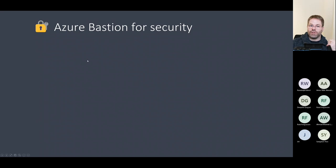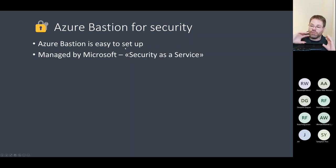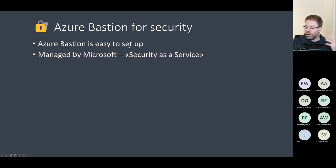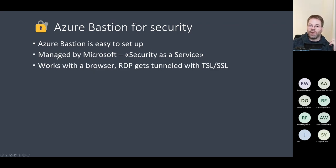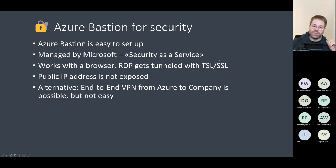Azure Bastion is quite easy to set up. The other way would be a VPN tunnel to your VM, but then you really need to know how that's done and have the right people and provider. With Azure Bastion, it's managed by Microsoft — essentially a managed service. It works just through the browser, and the RDP gets tunneled with TLS/SSL, so the public IP address is not exposed.